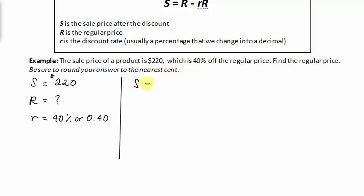Using the formula, S equals R minus little r times capital R. S is $220 equal to the regular price, well, that's unknown, R, minus the rate, which is 40%, or .40 times big R.